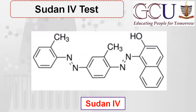Looking at the structure of Sudan 4 dye, it has a highly conjugated structure with conjugation extending from one end to the other. This is why its color is reddish-brown — because of extensive conjugation, it has a higher lambda max, which shifts the color toward the darker end of the spectrum. It is an azo dye because it contains an azo linkage.